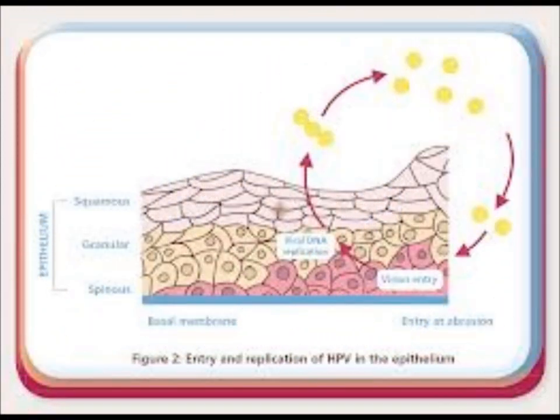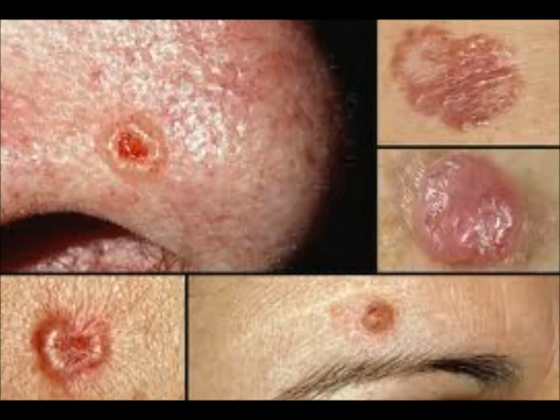Basal cell carcinoma. What is basal cell carcinoma? Basal cell carcinoma is the most common form of skin cancer, accounting for more than 90% of all skin cancer cases in the U.S. These cancers almost never spread — metastasize — to other parts of the body. They can, however, cause damage by growing and invading surrounding tissue.